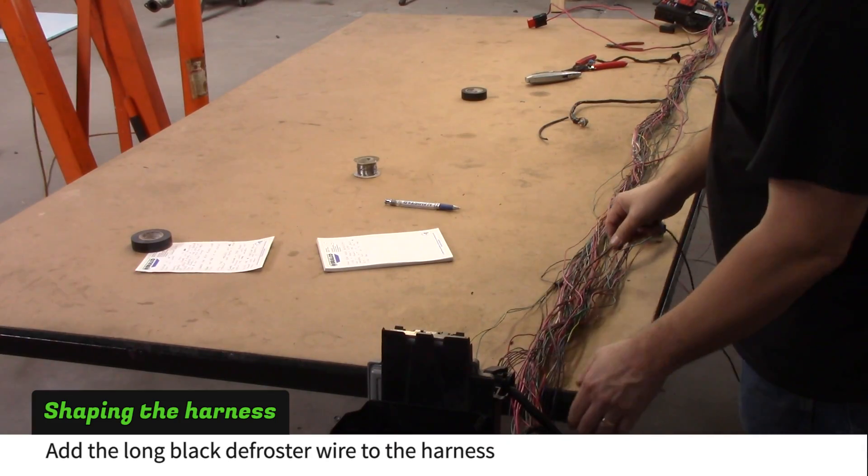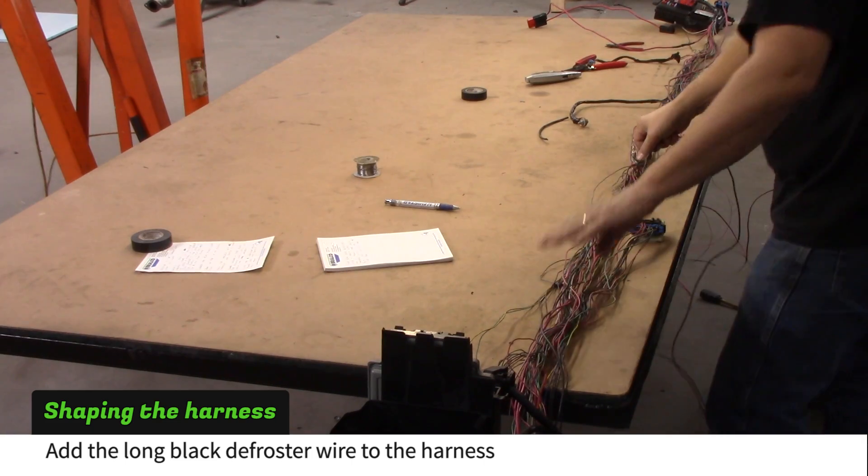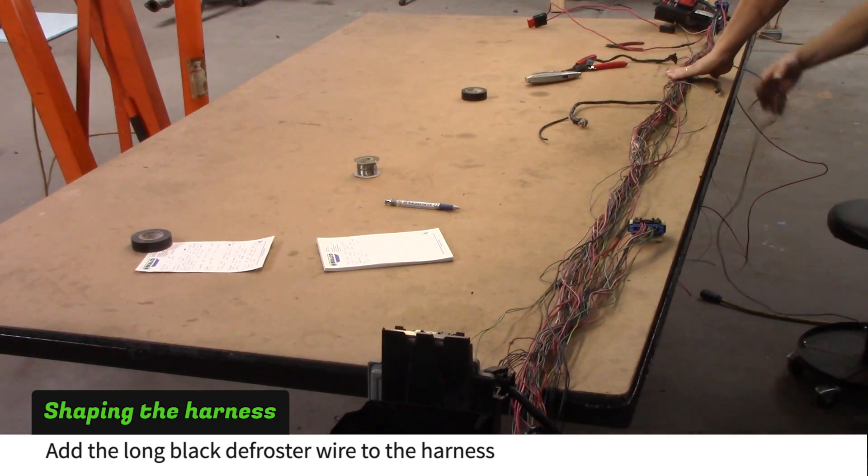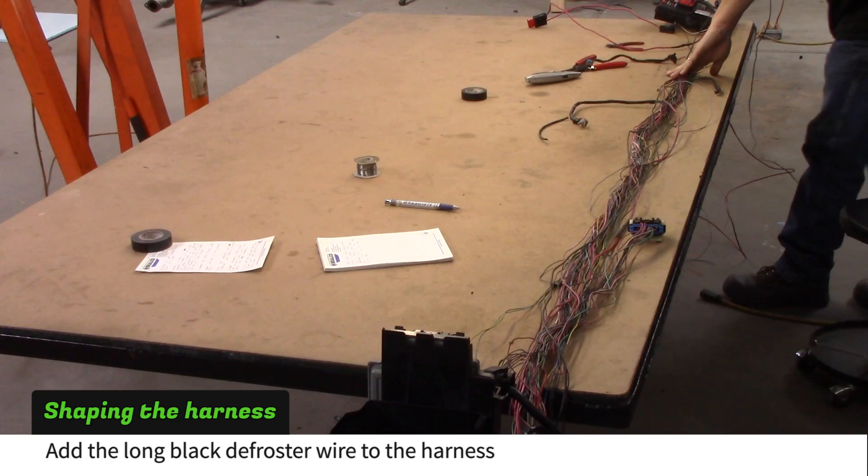Add the long black defroster wire to the harness. Leave a foot of excess on the fuse box end and 4 extra feet on the BCM end. We'll use this to extend the radiator fan wire later.